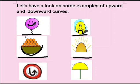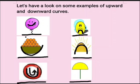Can you tell me what's this? Yes, it's a sun. And here, the sun forms a downward curve. Children, this is a traffic signal, and this U-turn is an example of an upward curve. Now, can you tell me what is this here? Very good, everyone. This is an umbrella, and it's an example of a downward curve.